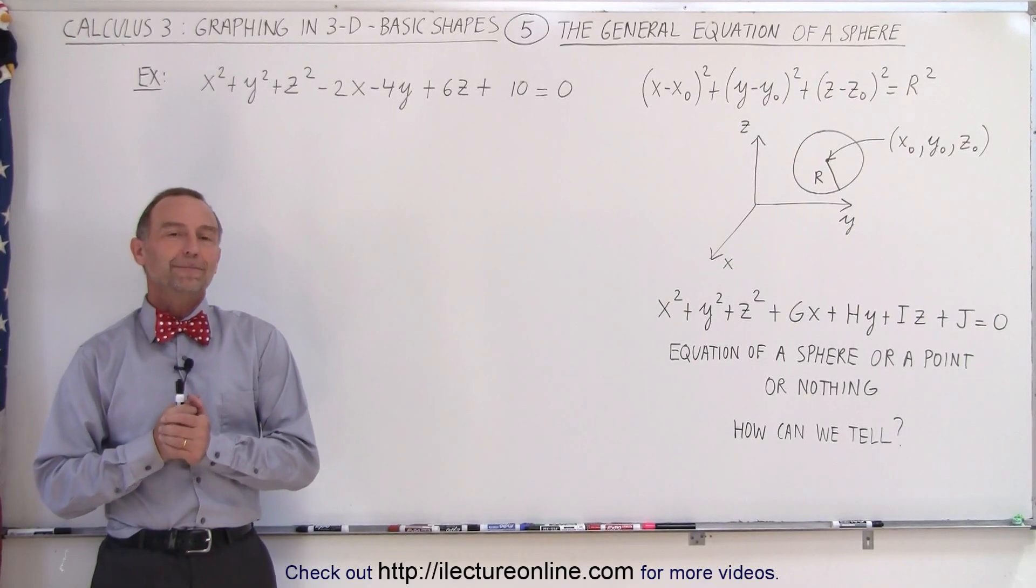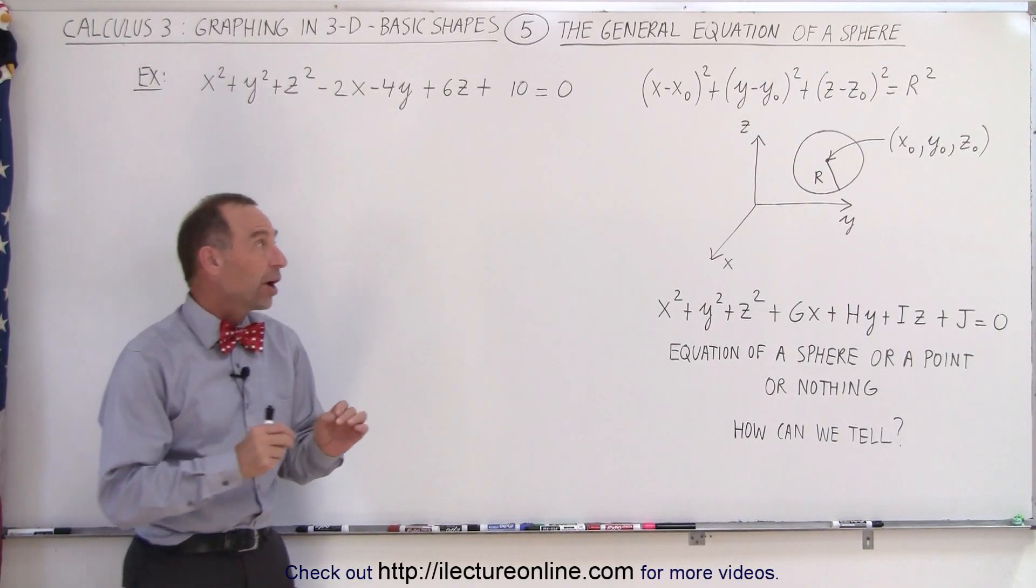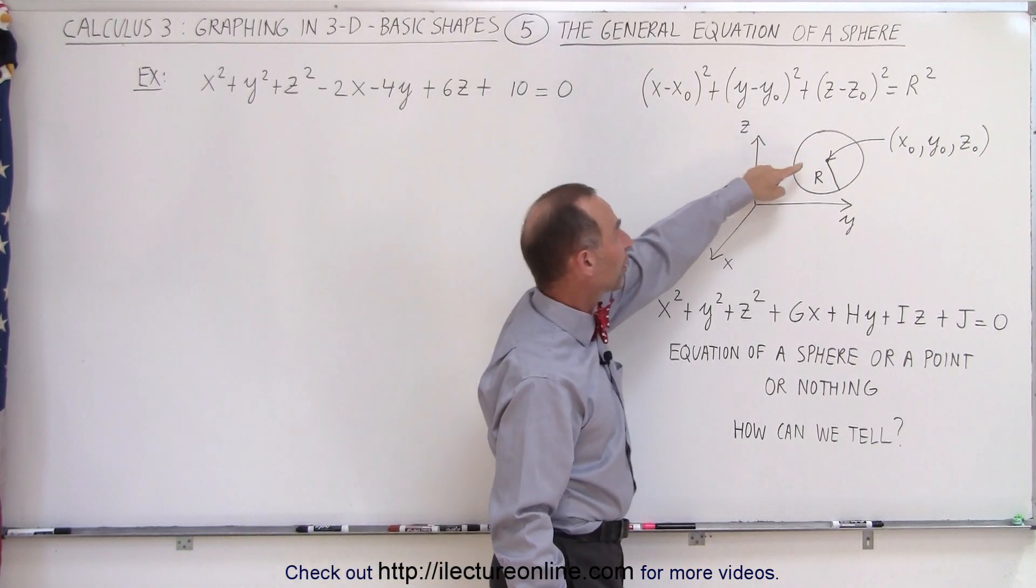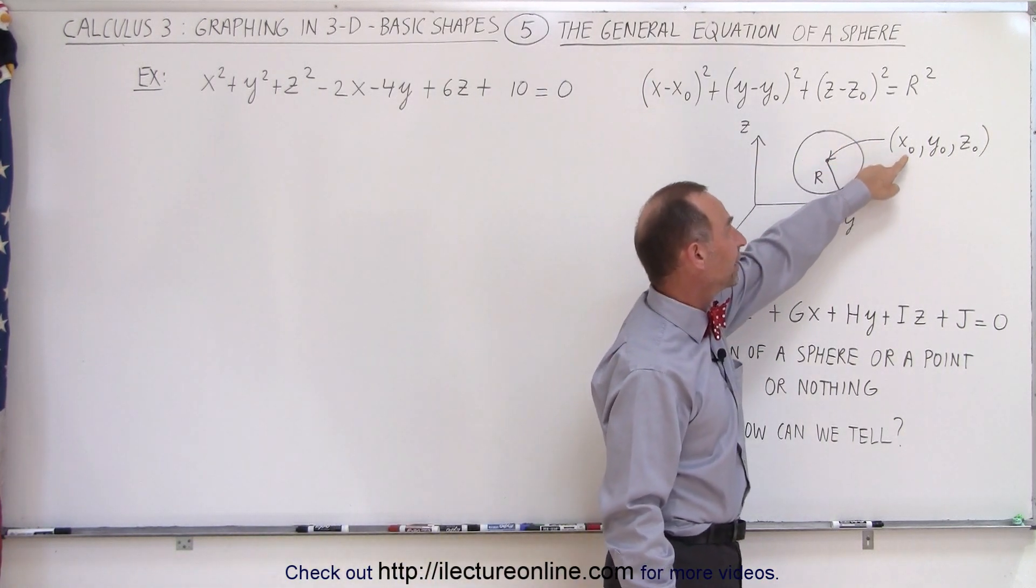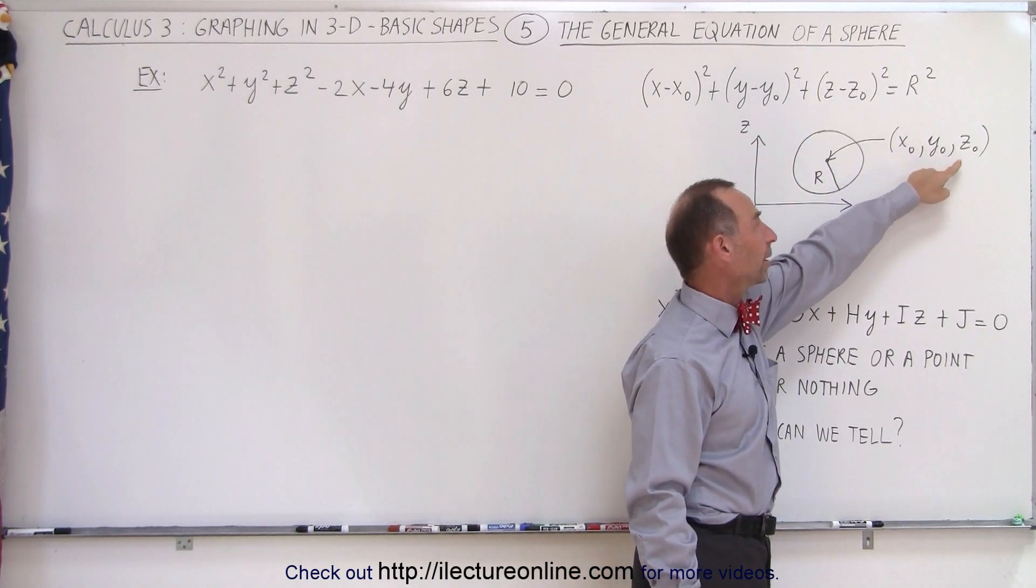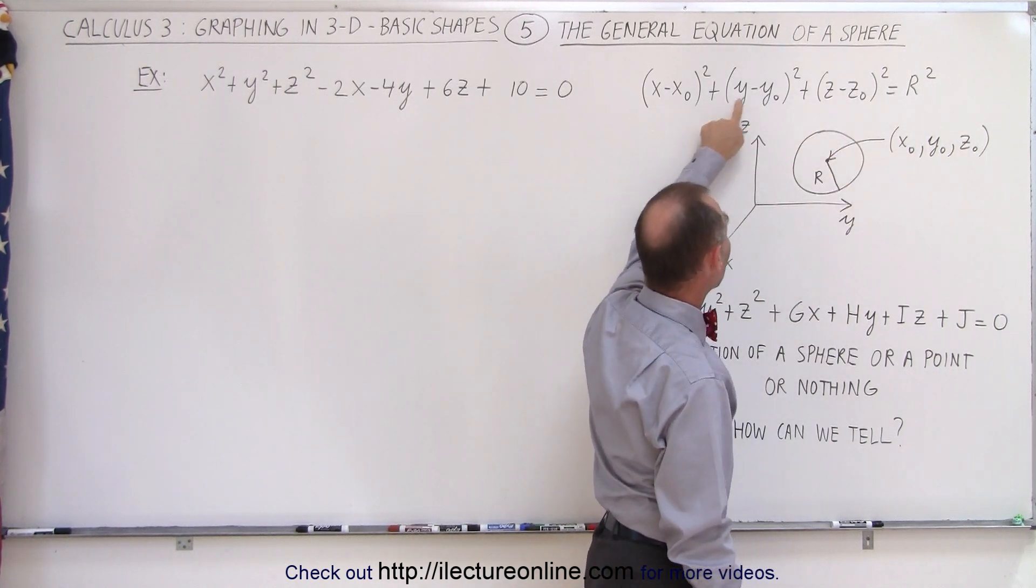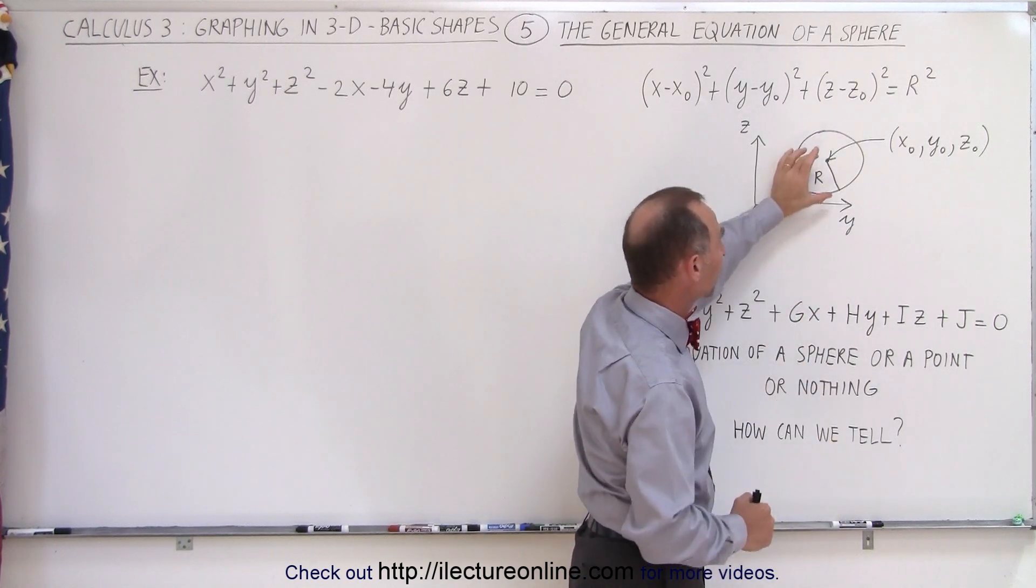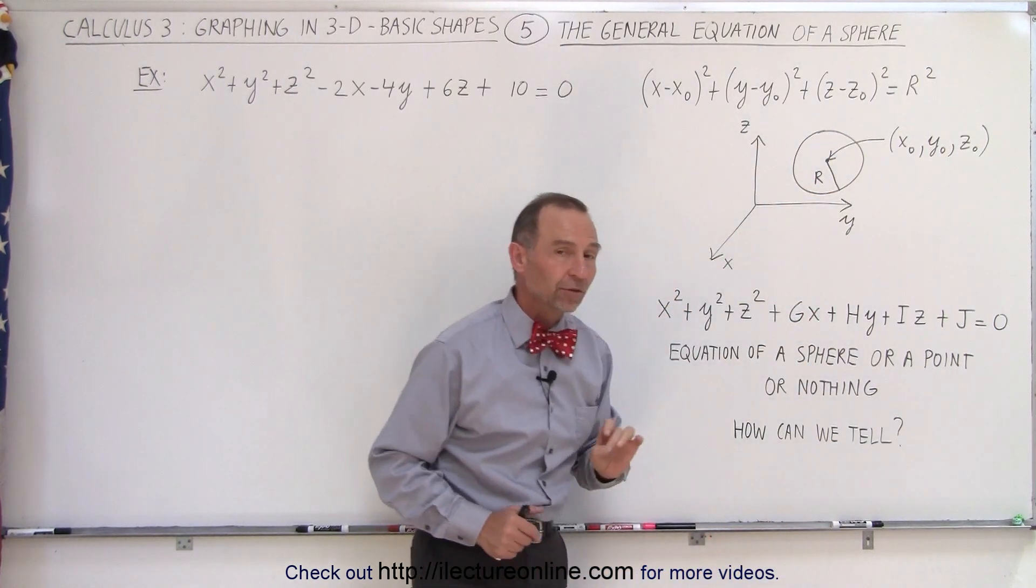Welcome to our lecture online. In the previous video we saw that this was the equation of a sphere where the center of the sphere is defined by the coordinates x sub-naught, y sub-naught, and z sub-naught. x, y, and z represent any point on the surface of the sphere and r is the radius of the sphere.